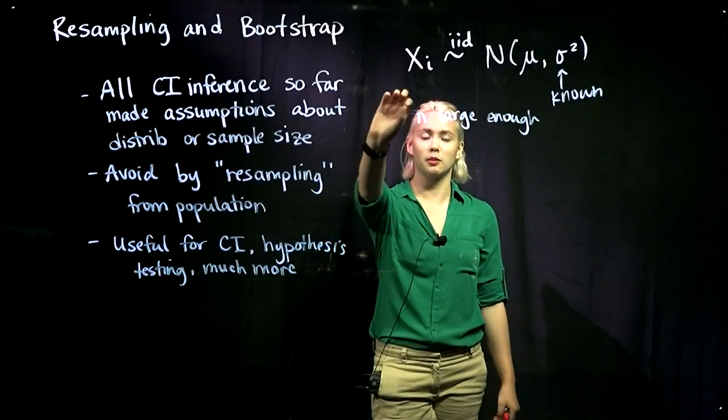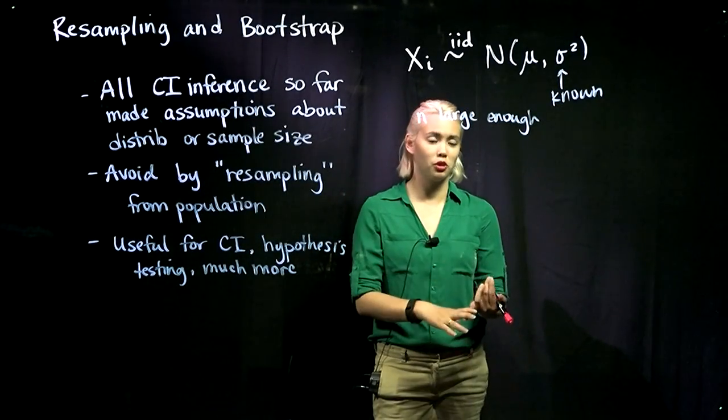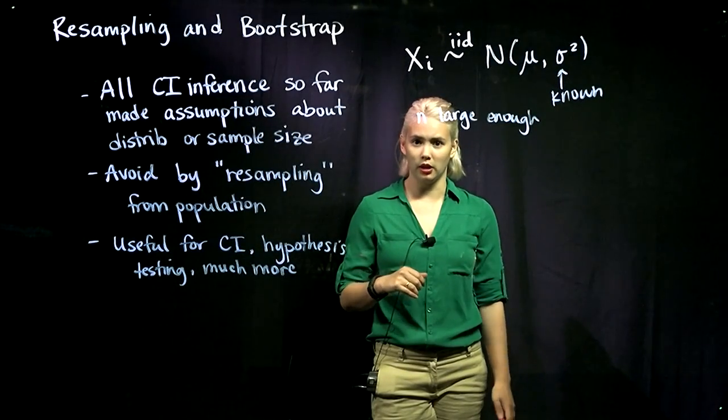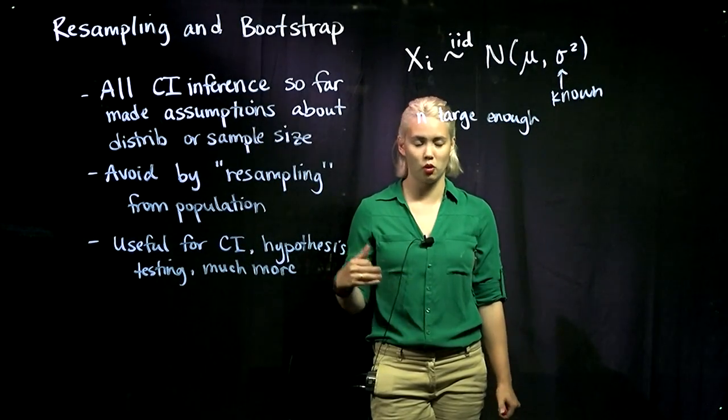So we've had some assumptions that we're making either about the distribution or about the sample size, and those might be a little bit suspect. So what can we do?